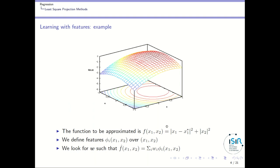Let's look at a simple example to understand the idea. Imagine the function we want to approximate is some function of x1 and x2. We define some features in the input space — phi1 and phi2 — and we look for weights of these basis functions such that our model f-hat of x1, x2 is the sum over the different basis functions of the weights times the features — a linear combination of the features, a linear projection into the basis function domain.